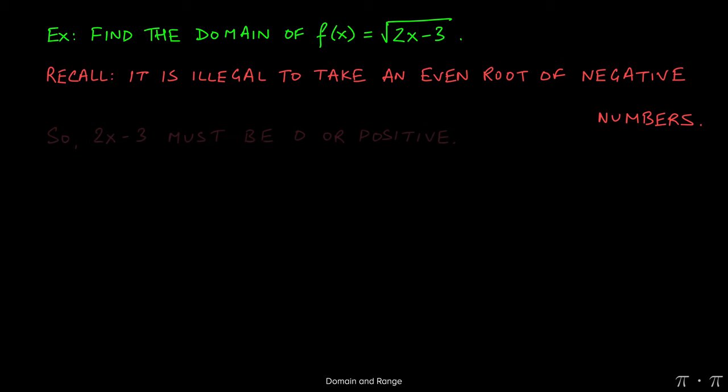So if we start with this, we notice that 2x minus 3, the radicand, the thing inside the radical, either has to be zero or it has to be positive. It can't be negative, so the two scenarios that are left for us are it might be zero, or it's allowed to be positive, but it most certainly can't be negative.